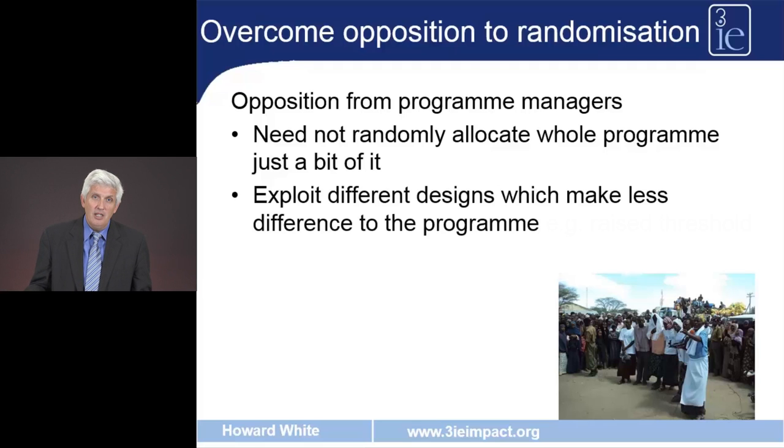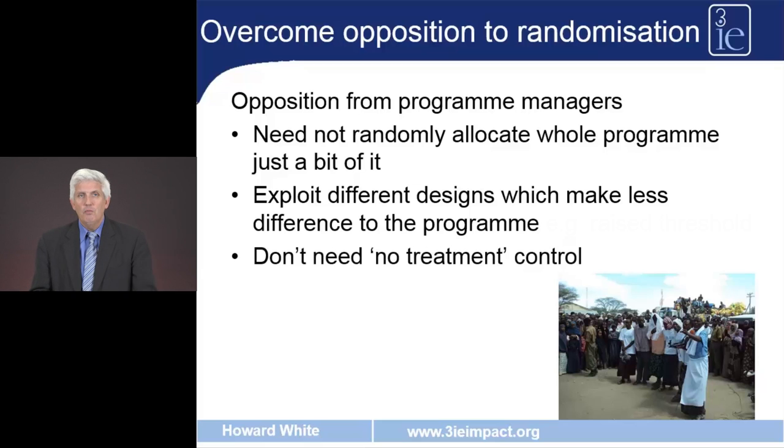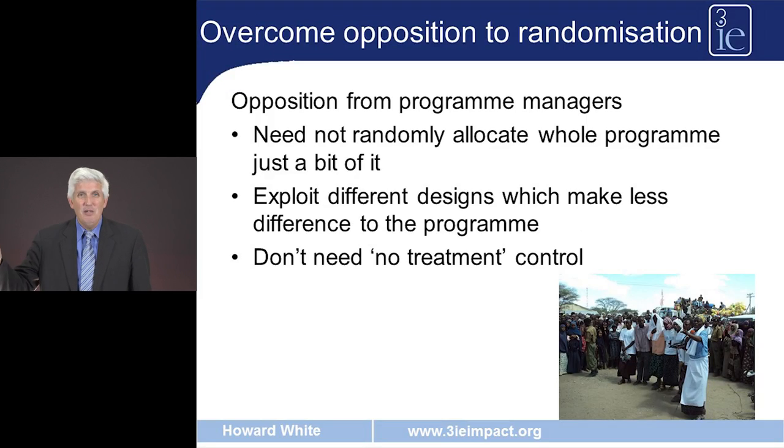There are also encouragement designs, which we heard about last time, that don't change the nature of the programme or its implementation whatsoever, and actually yield information on how to increase participation rates and take-up. Finally, you don't need to have a no-treatment control group. In clinical trials, there's not normally a no-treatment control group — rather, the control group receives the existing treatment. We can do the same in a development setting: the control group gets whatever existing policy or programmes are in place. That's the policy question of interest to policymakers. They don't want to know how a programme compares to doing nothing — they want to know how it compares to what they're doing already, and whether it makes better use of resources. So we can make randomised controlled trials more policy relevant by not having a no-treatment control group.